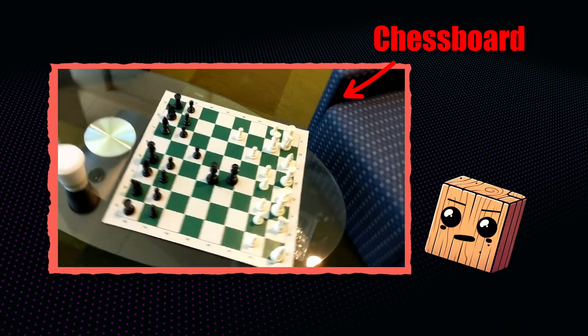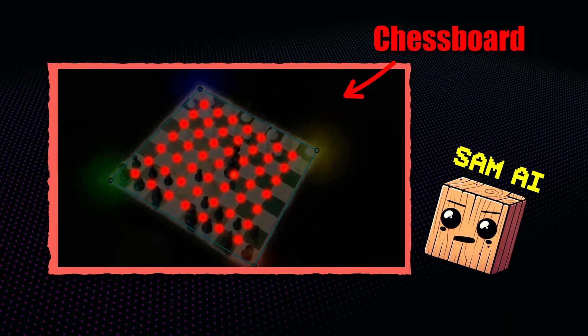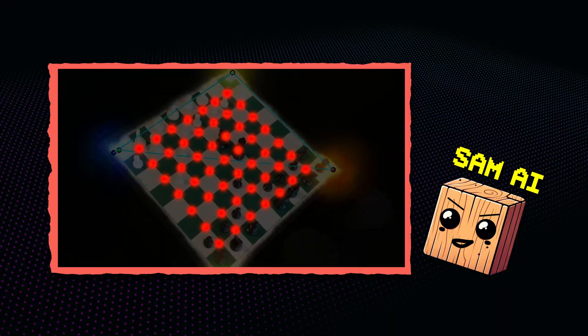This is a chessboard. Here's our AI model from the last video, finding its outline and corners, but not its 3D position.